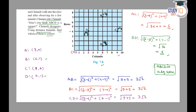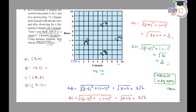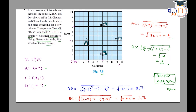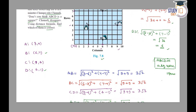ABCD एक square है। अब आपको बताना है कि कौन सही था। चमपा ने चमेली से पूछा था कि क्या ABCD square बन रहा है, और चमेली ने disagree किया था। इसका मतलब — Champa is correct while Chameli is incorrect. तो यहाँ पर हम लिख सकते हैं: Champa is correct.